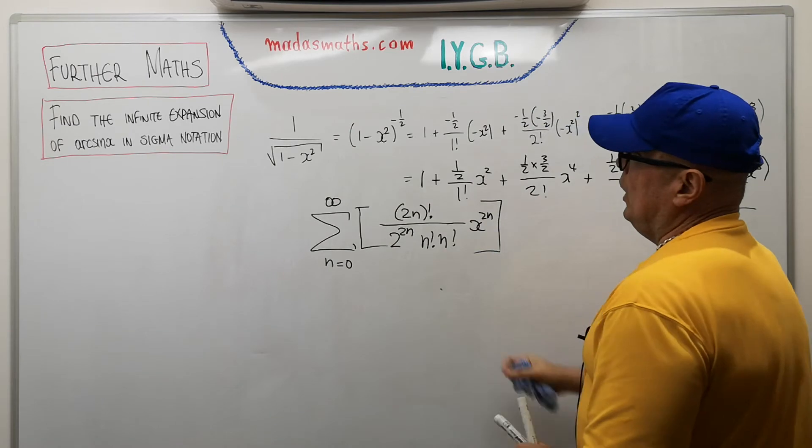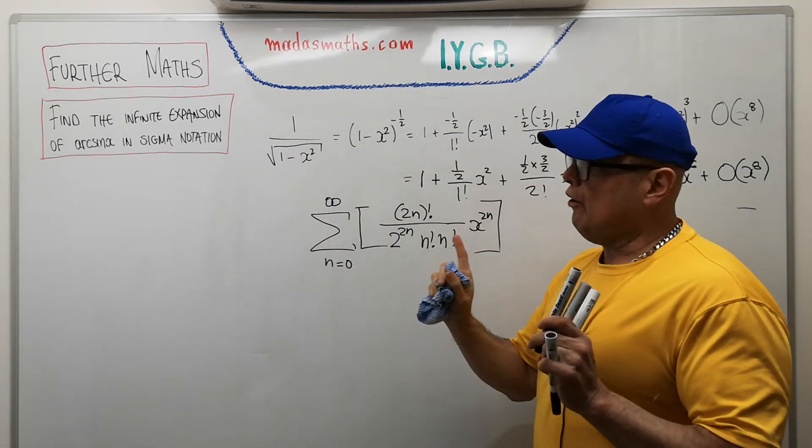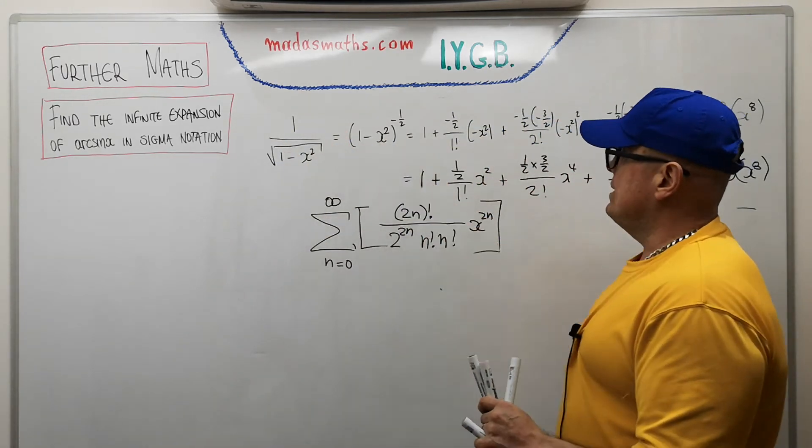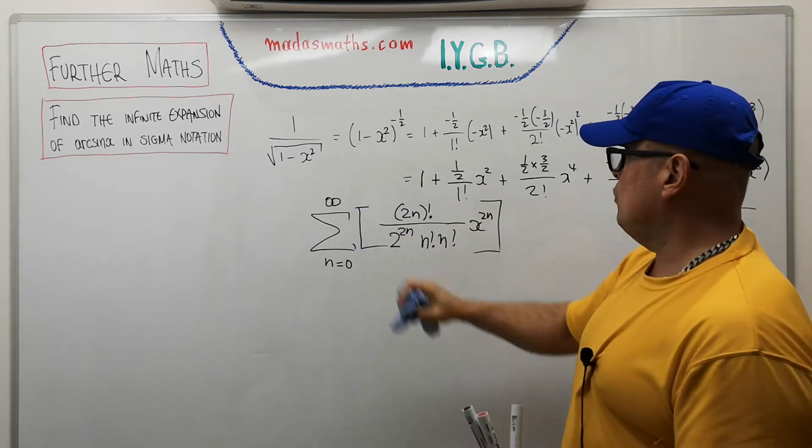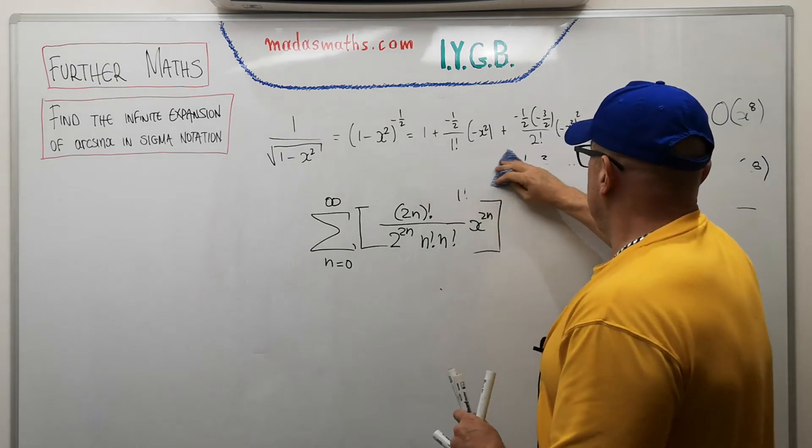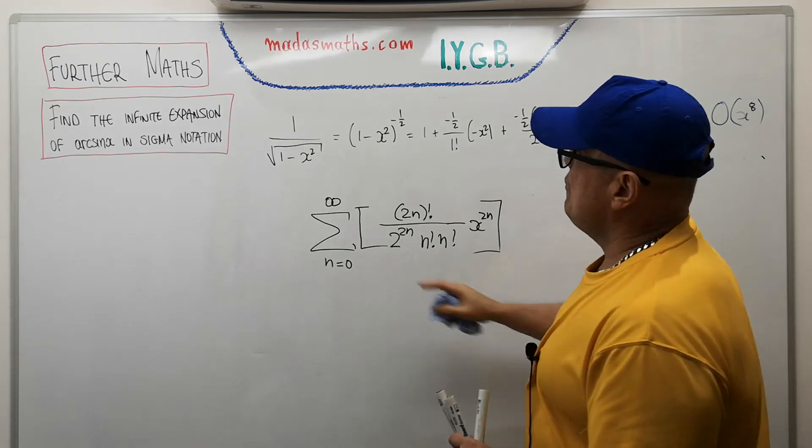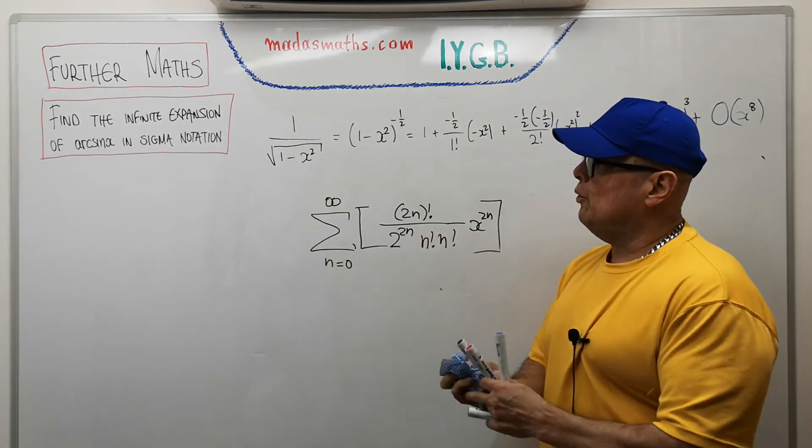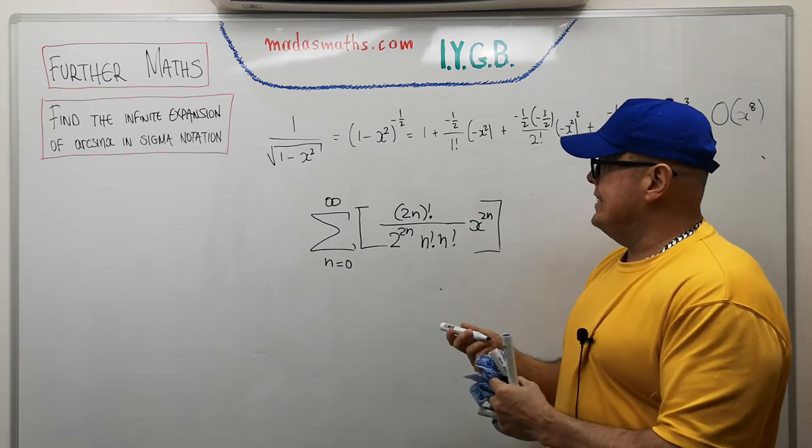So far, we have actually find a general term, not for the arcsin, but for this particular binomial expansion, which is the same as that. So this is definitely the same as this, running from n is equal to one to infinity. Okay, how are we going to get now the arcsin out of this? Remember, in the beginning, I mentioned, the reason I picked this particular expression is because that's the exact differential of the arcsin.